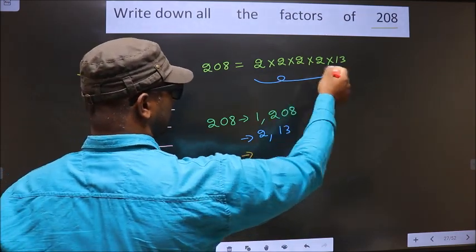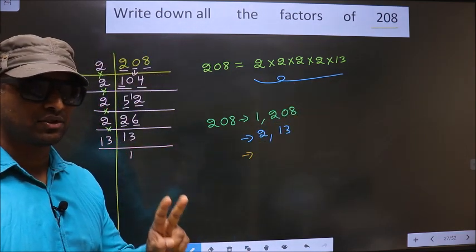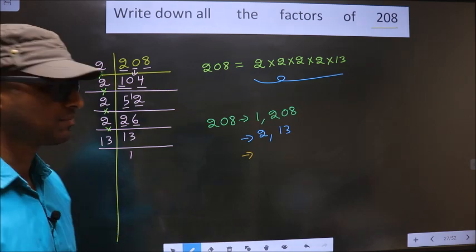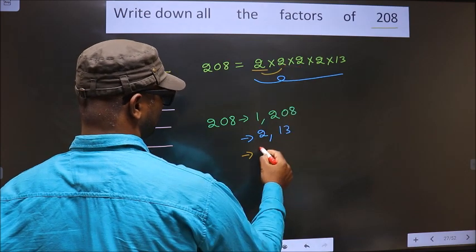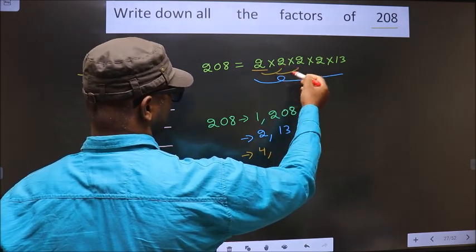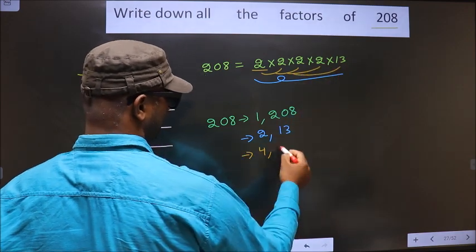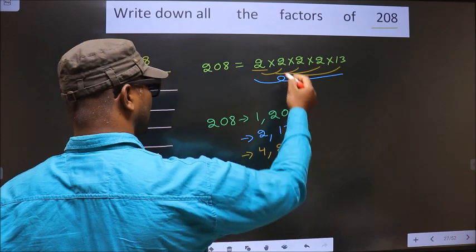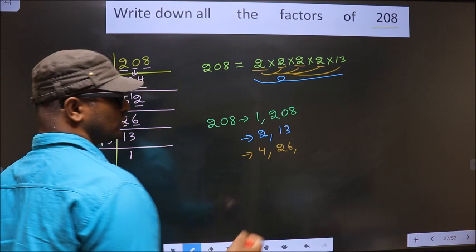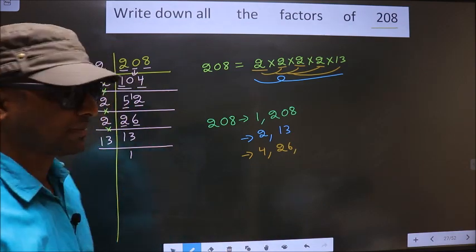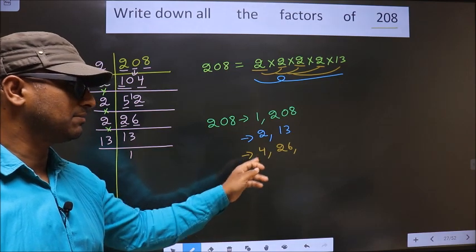Now from these numbers, you take a combination of 2 numbers. First I fix 2 and combine with 2 — I get 4. If I combine with this 2, then also 4. When I combine with the number 13, I get 26. So no more combinations possible.